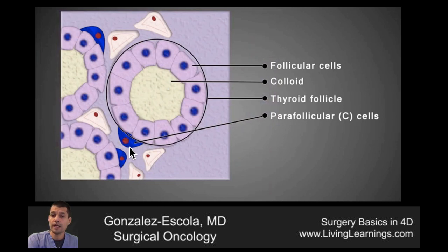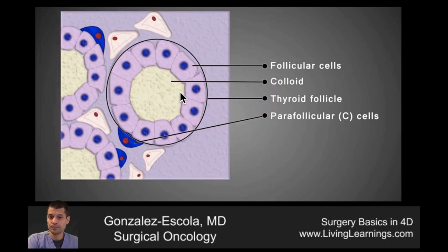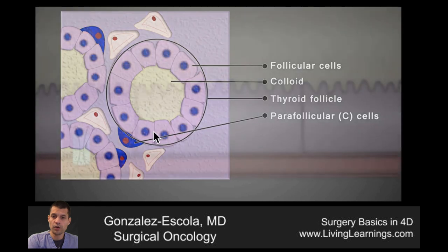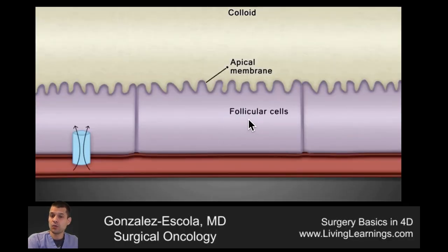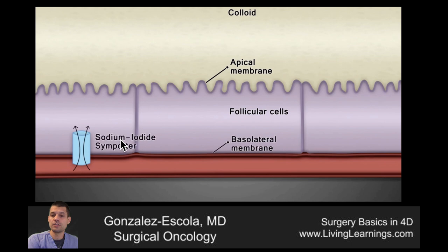On the outside, you can find parafollicular or C cells, which are outside of the thyroid follicle. If we zoom in into this area, we are going to be able to see the colloid or lumen on top and the follicular cells with their apical membrane, basolateral membrane, and sodium and iodide being imported.